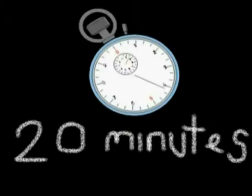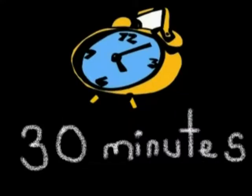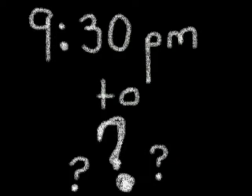An alarm goes off after every six minutes. Another alarm goes off after every 20 minutes. A third alarm goes off after every 30 minutes. If all three alarms ring at 9:30 p.m., when will they go off together again?